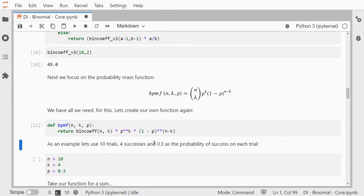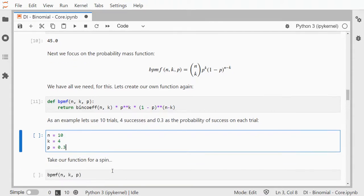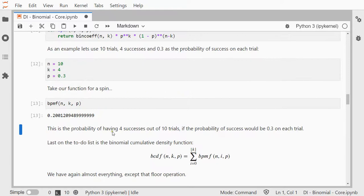All right, let's use 10 as our number of trials, 4 as our number of successes, and 0.3 as the probability of success on each trial, and we finally can calculate a probability, which in this case shows that the probability of having 4 successes out of 10, if on each trial the chance for success would be 0.3, is about 0.2001.